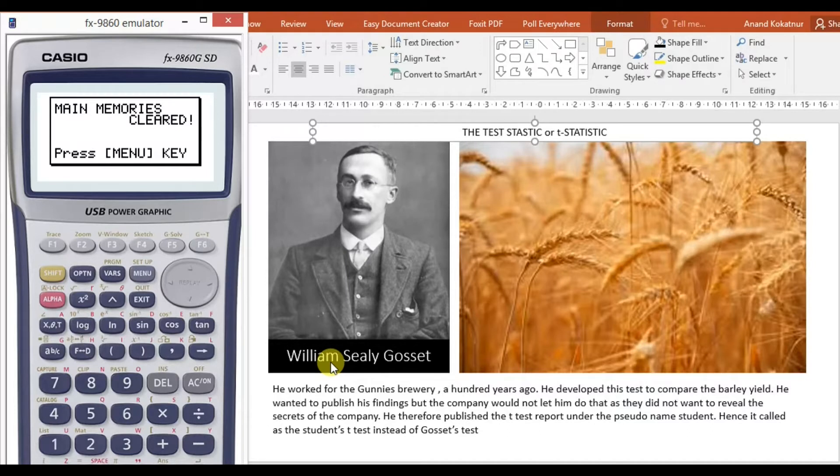He developed a test to compare the barley yield. He wanted to publish his findings, but the company would not let him do so because they did not want him to reveal the company's secrets. He therefore published the t-test report under the pseudonym 'Student,' hence it's called a Student's t-test rather than Gossett's test.